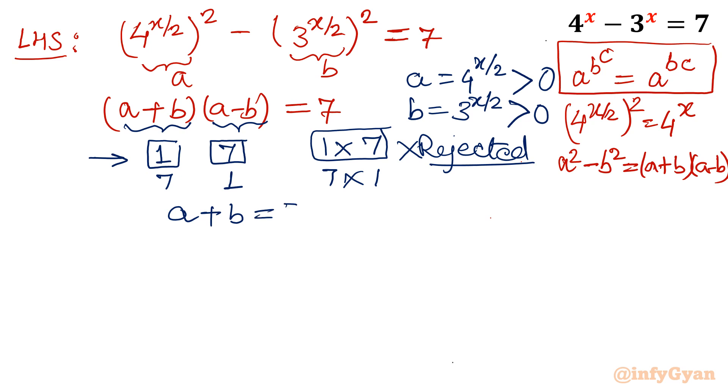Now let me write. A plus B equal to 7. A minus B equal to 1. Add. Once you will add, 2A will be 8, A will be 4. Or you can put the value of A in any of the equation, or I can use subtraction also. Then 2B, A will be cancelled out. B minus of minus B. So 2B equal to 6, 7 minus 1, 6. B will be equal to 3.